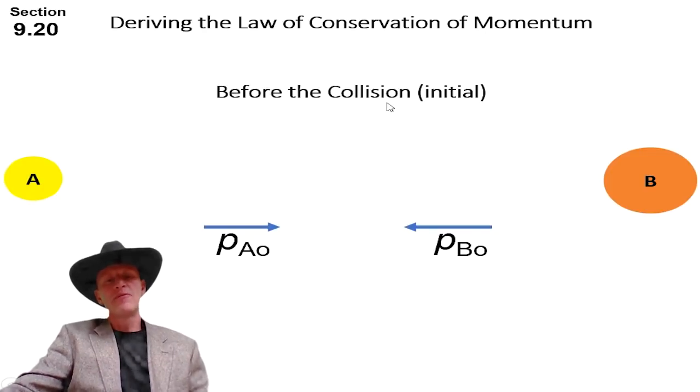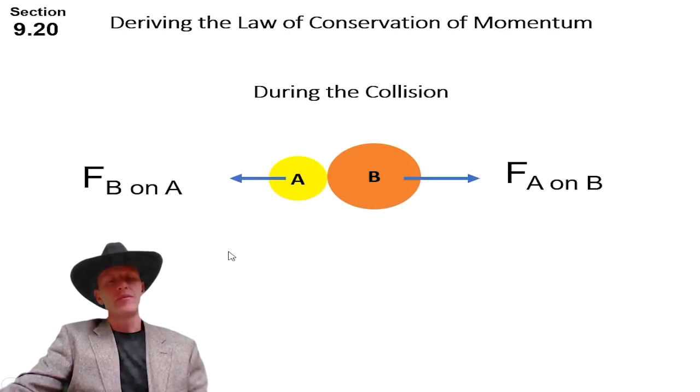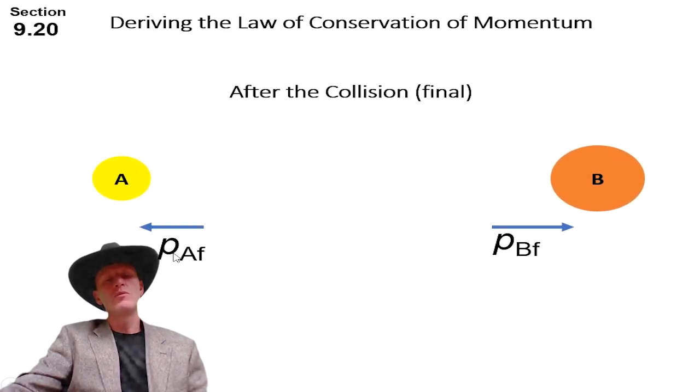So let's look at a collision. Before the collision, let's imagine this A object is moving towards this B object. They both have a certain momentum. Remember this is the symbol for momentum. Momentum is P and it is equal to mass times velocity. So they have their own initial or original momentum. Then they collide, and when they collide A applies a force on B and B applies a force on A. And then they move away with their new momentum.